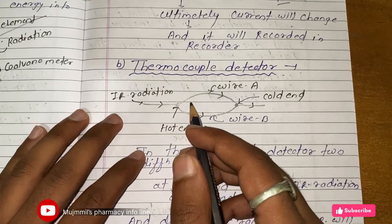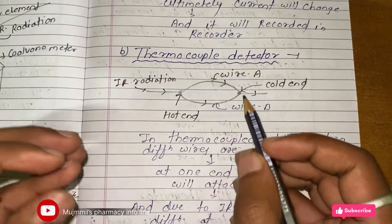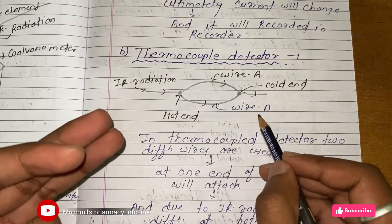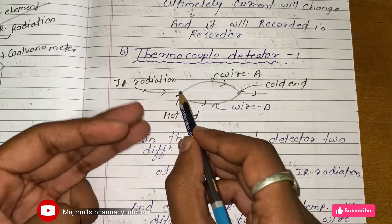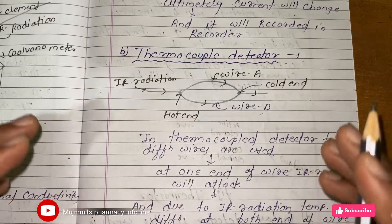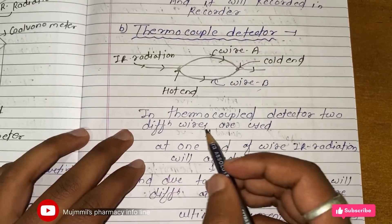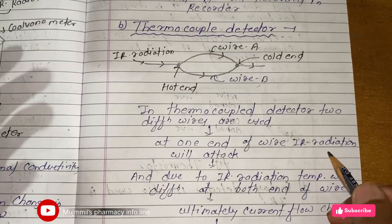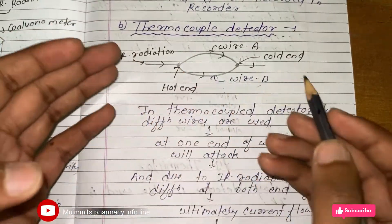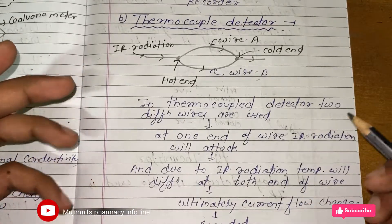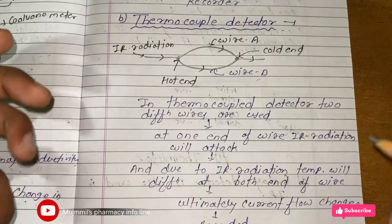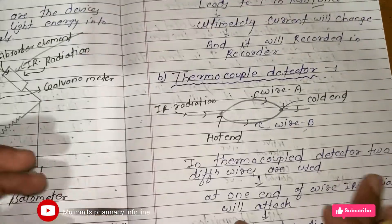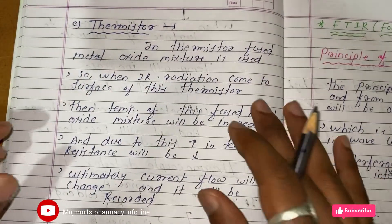The second detector is the thermocouple detector. It uses two wires — wire A and wire B — with one hot end and one cold end. In the thermocouple detector, IR radiation strikes at one end, increasing temperature, which increases resistance, ultimately changing the current flow, and this is recorded. The working is very simple.